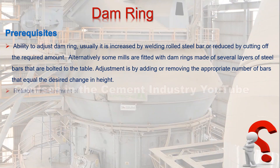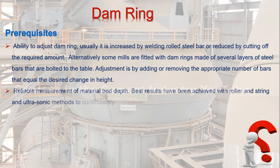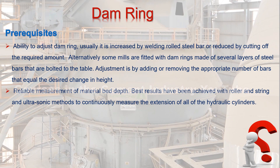Reliable measurement of material bed depth: best results have been achieved with roller-and-string and ultrasonic methods to continuously measure the extension of all of the hydraulic cylinders. Know the normal bed depth, which is usually in the range of 50 to 80 millimeters.